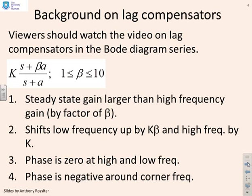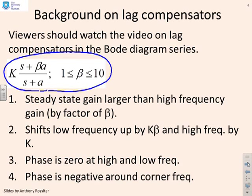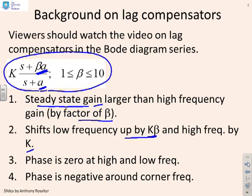Some background on lag compensators. Here's a definition: K times (S + beta·A) over (S + A), where beta is bigger than 1 and usually less than 10. The key properties of a lag compensator are: the steady state gain is larger than the high frequency gain by a factor of beta, because you've got beta·A in the numerator and A in the denominator. So we're going to shift the low frequency up by K·beta and the high frequency by K. The phase is zero at both high and low frequencies, and negative near the corner frequencies.